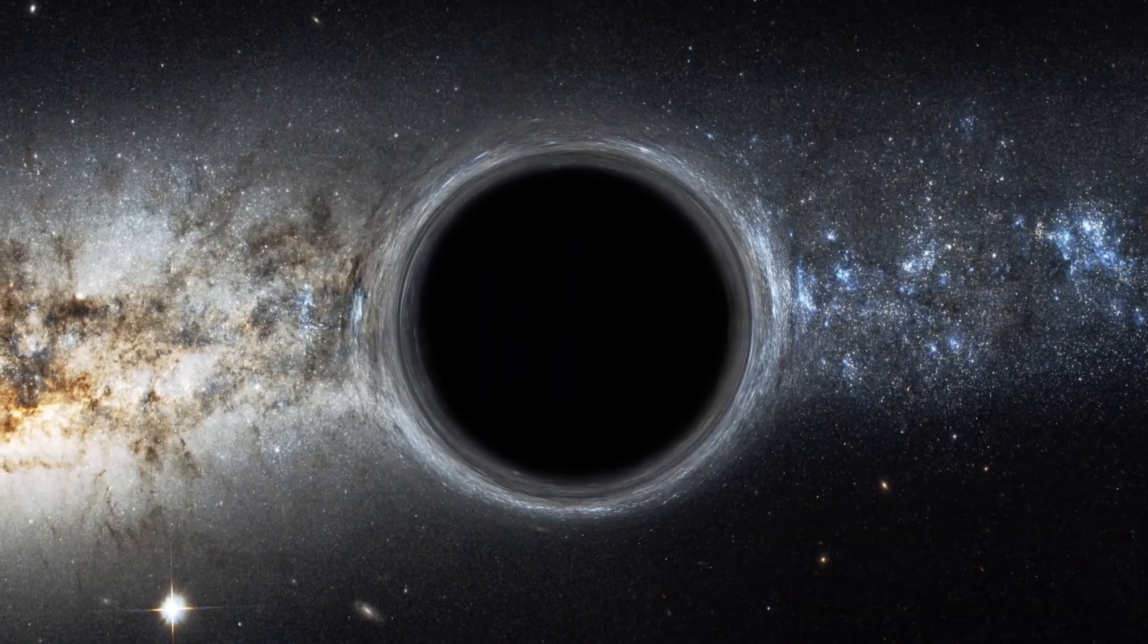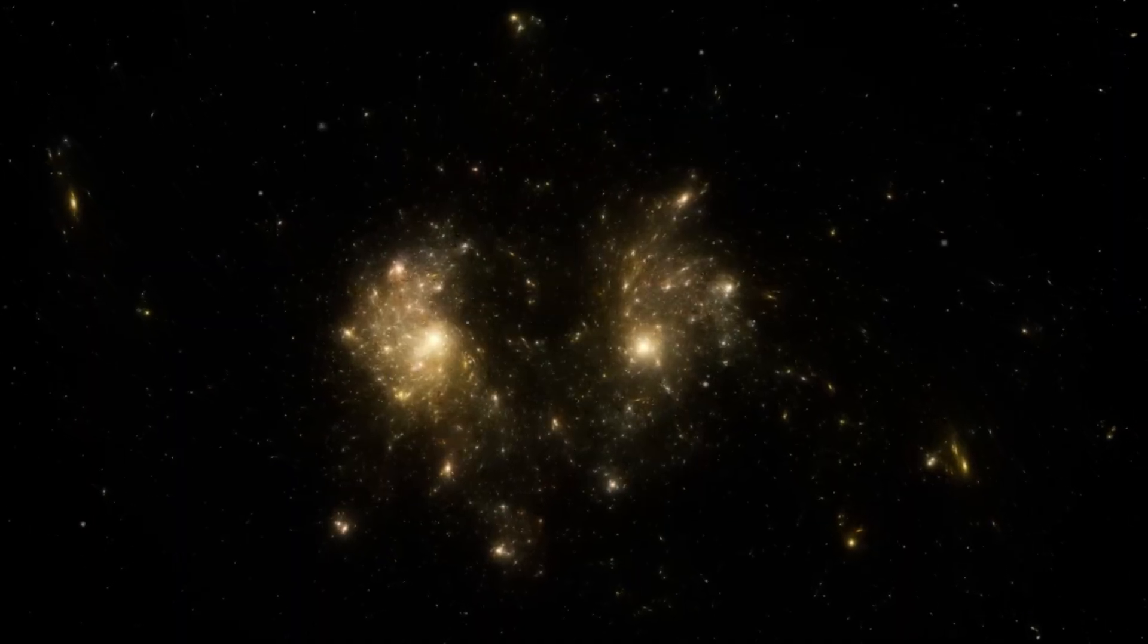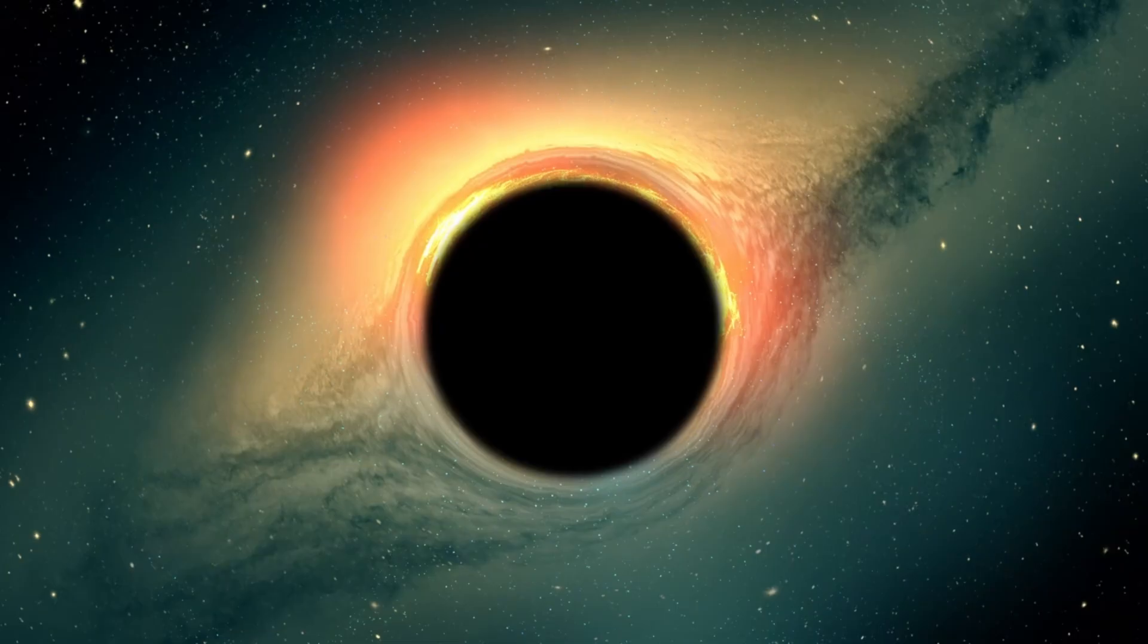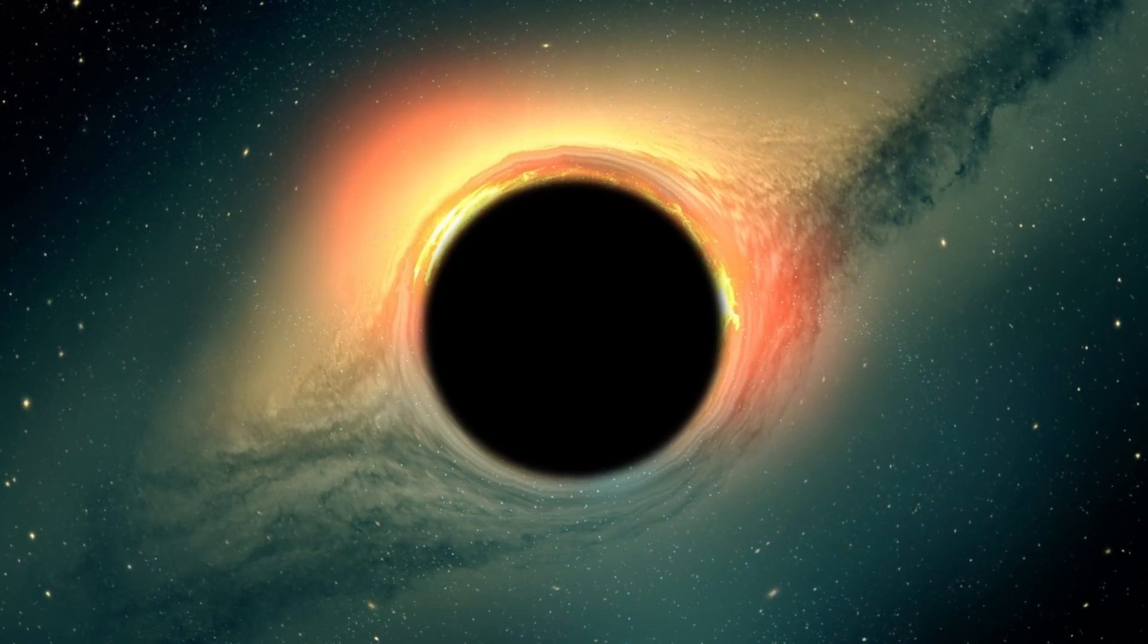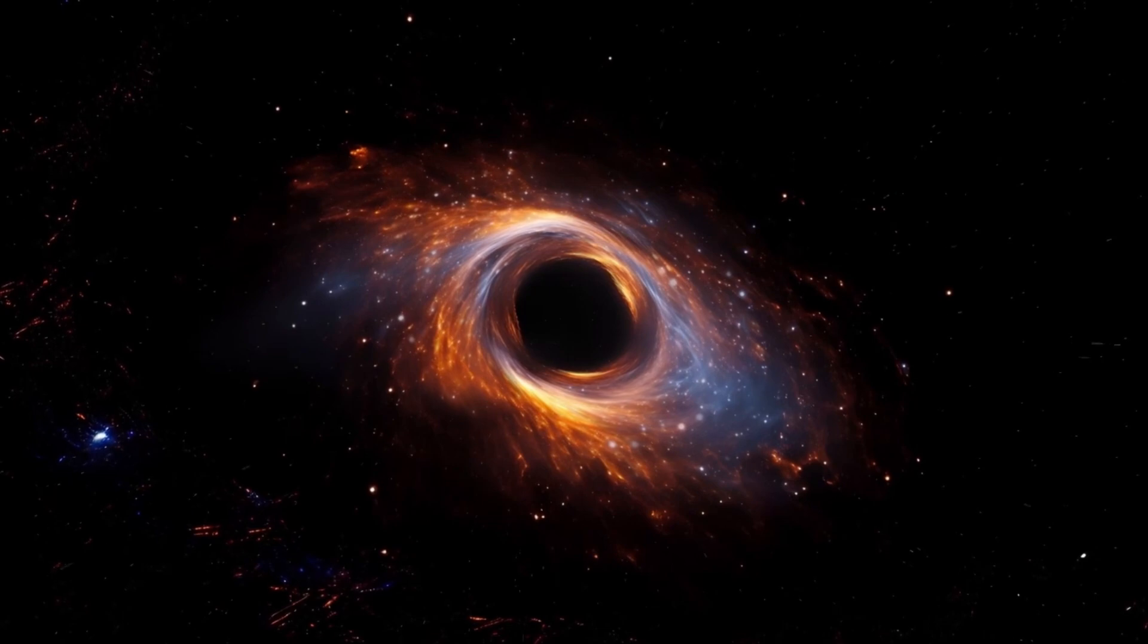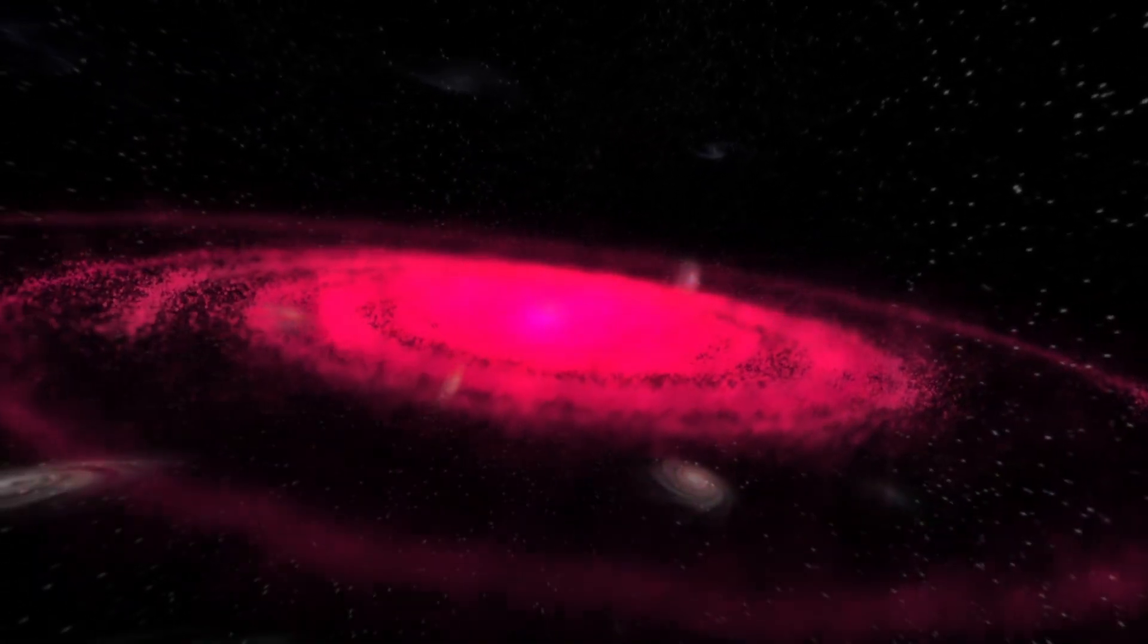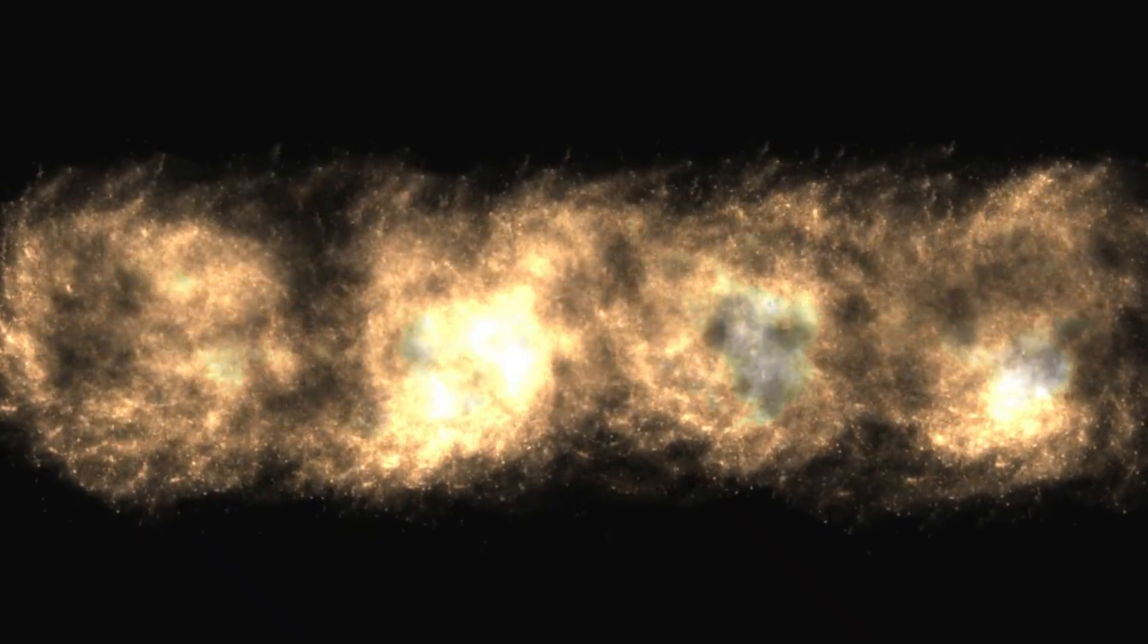Roberto Maiolino, a big name in astrophysics from the University of Cambridge, led the team that spotted this anomaly. He called it a game-changer. He said, it's way too early in the universe to see a black hole this massive and eating this fast. We're talking about a universe that's less than a billion years old here. Conventional wisdom says supermassive black holes need billions of years to grow this big. They start as smaller black holes, maybe a few hundred times the sun's mass, and slowly bulk up by gobbling gas or merging with other black holes. But GNZ11's black hole is already a giant, and it's not slowing down. It's like finding a fully grown T-Rex in a dinosaur nursery. It just doesn't add up.